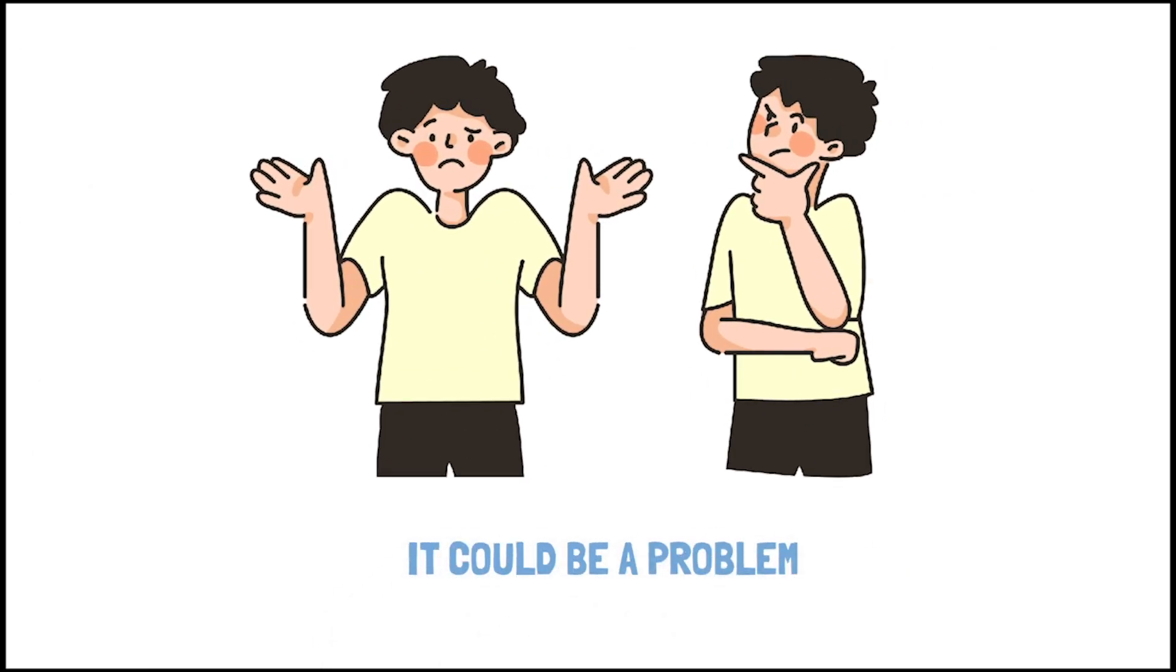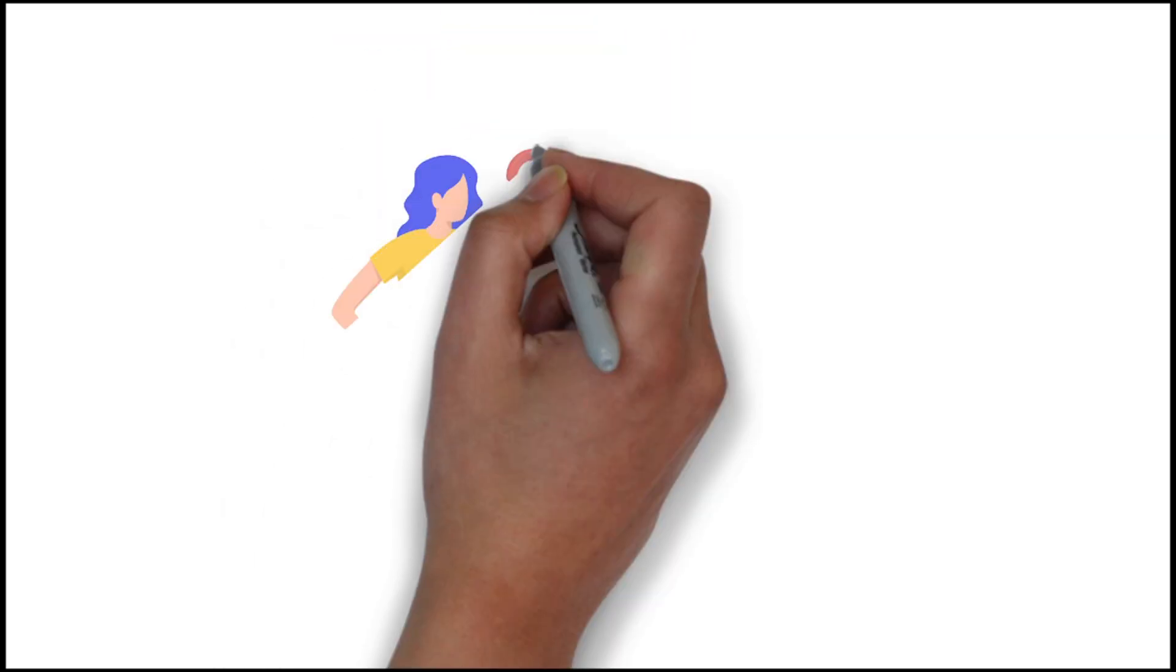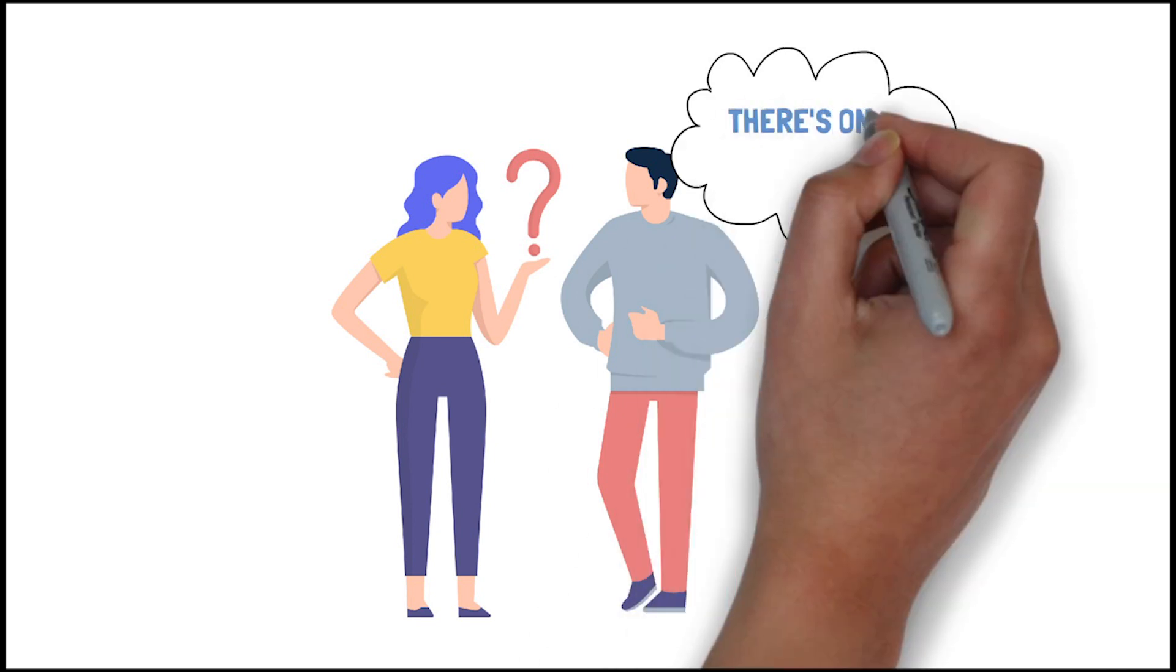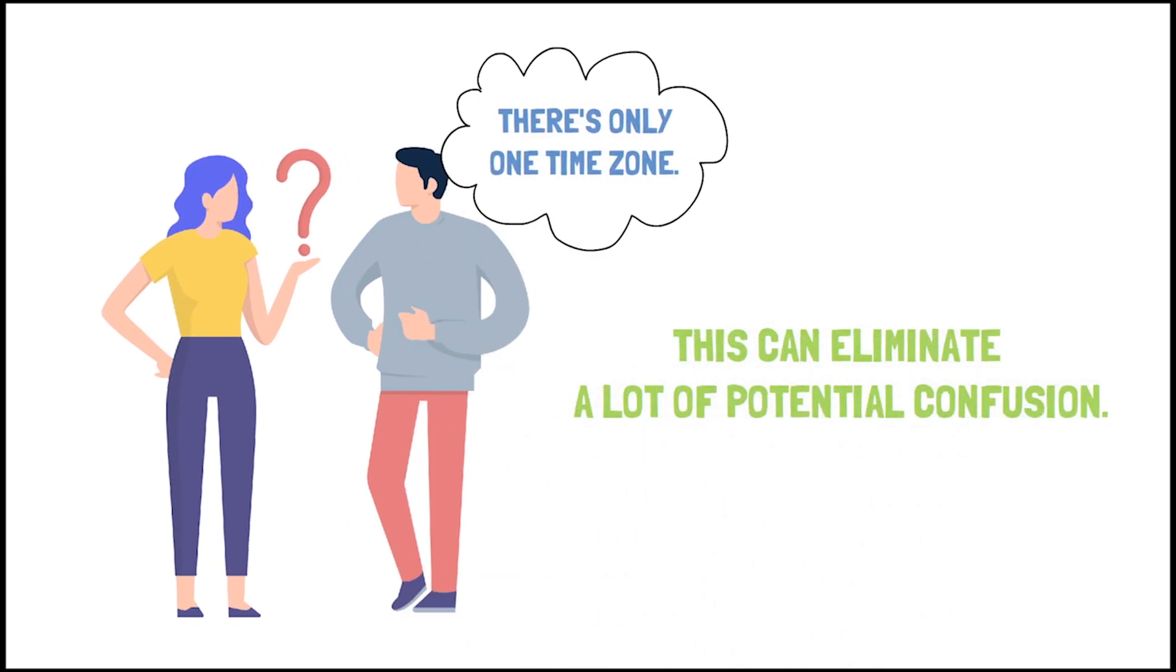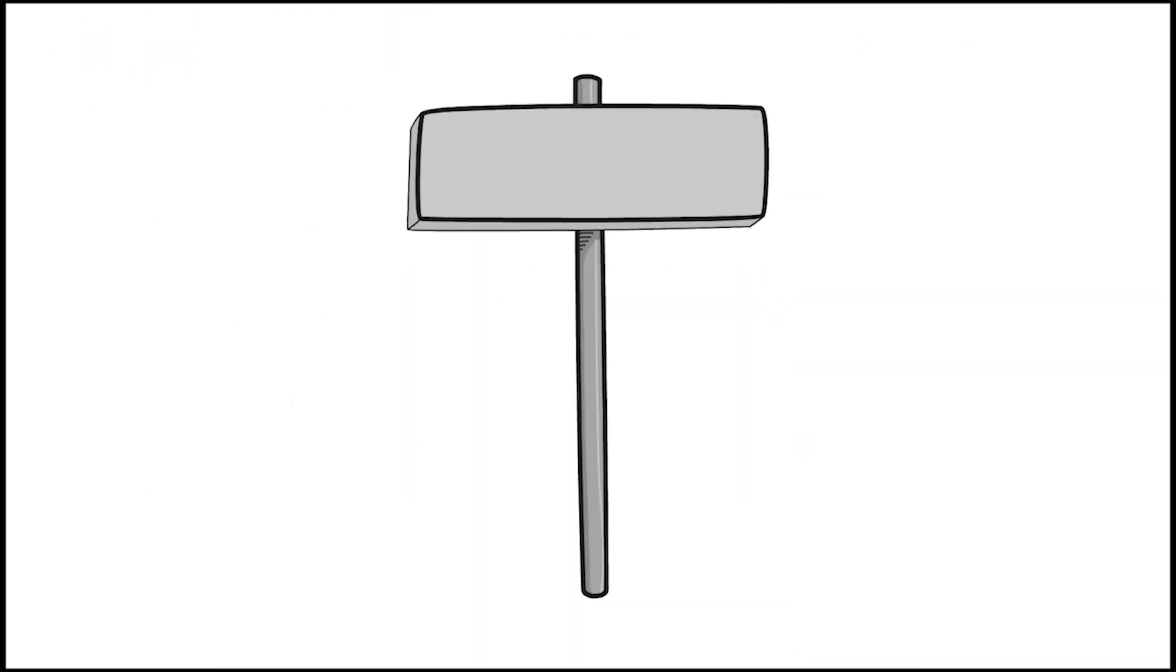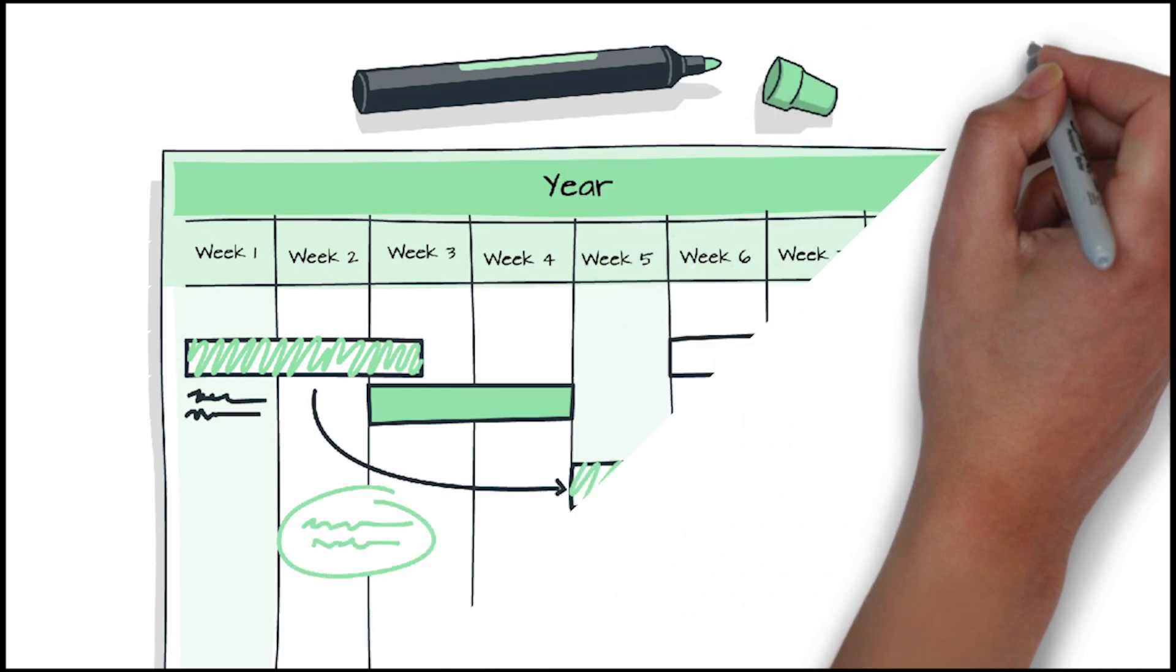So on the one hand, it could be simpler. We won't have to ask what time zone a person is in because there's only one. It could eliminate a lot of potential confusion. On the other hand, it could make it more difficult to talk about different daily schedules.